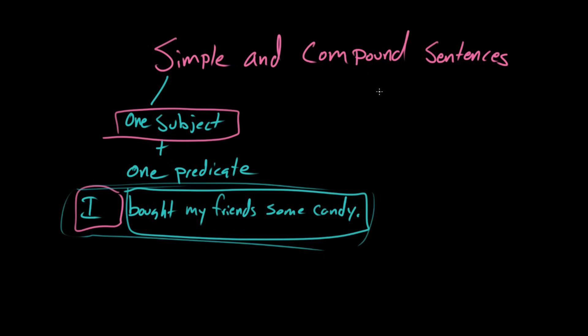But a compound sentence is basically two or more simple sentences joined together. So, that would be two subjects plus two predicates. Or more. Two, three, a bajillion. Sure. That would be a very long sentence to read. But you could do it. It would be a very, very compound sentence.